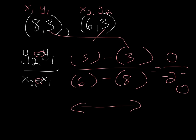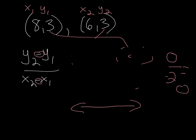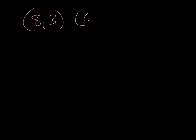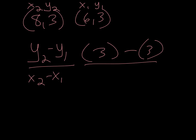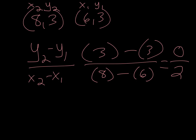I could also do it the other way. If I had 8, 3 and 6, 3, I could make this x sub 1 and y sub 1, and this x sub 2 and y sub 2, and then substitute it in. So I have 3 minus 3 over — now my x sub 2 is 8 and my x sub 1 is 6. And I get 0 over positive 2 this time, but that is still 0.